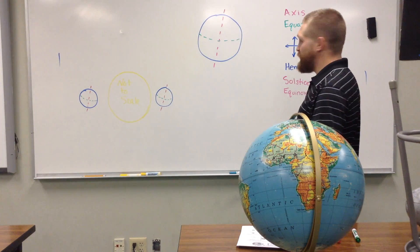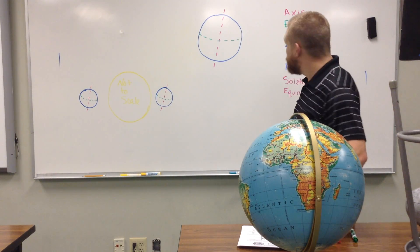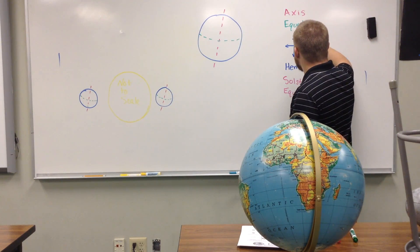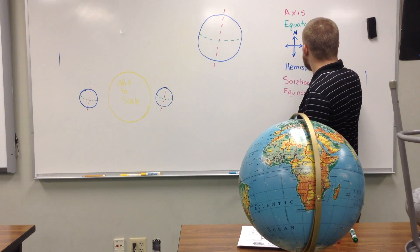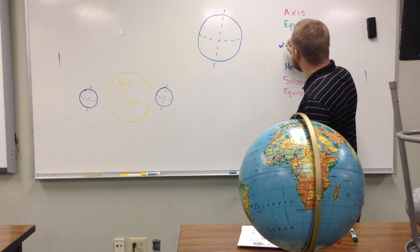The next thing with seasons is it has everything to do with the northern hemisphere and the southern hemisphere, and which way is facing towards the sun. So, here's a compass rose. You need to always remember north on a globe is up, east, south, west.